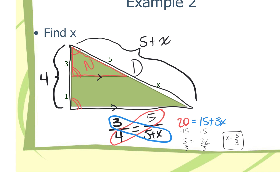Great question — why is it five over five plus x instead of five over x? Camilla is right: the reason it's five plus x is because the denominator triangle is the whole thing. The entire length of that side is not five and not x — it's five plus x, both of them added together.